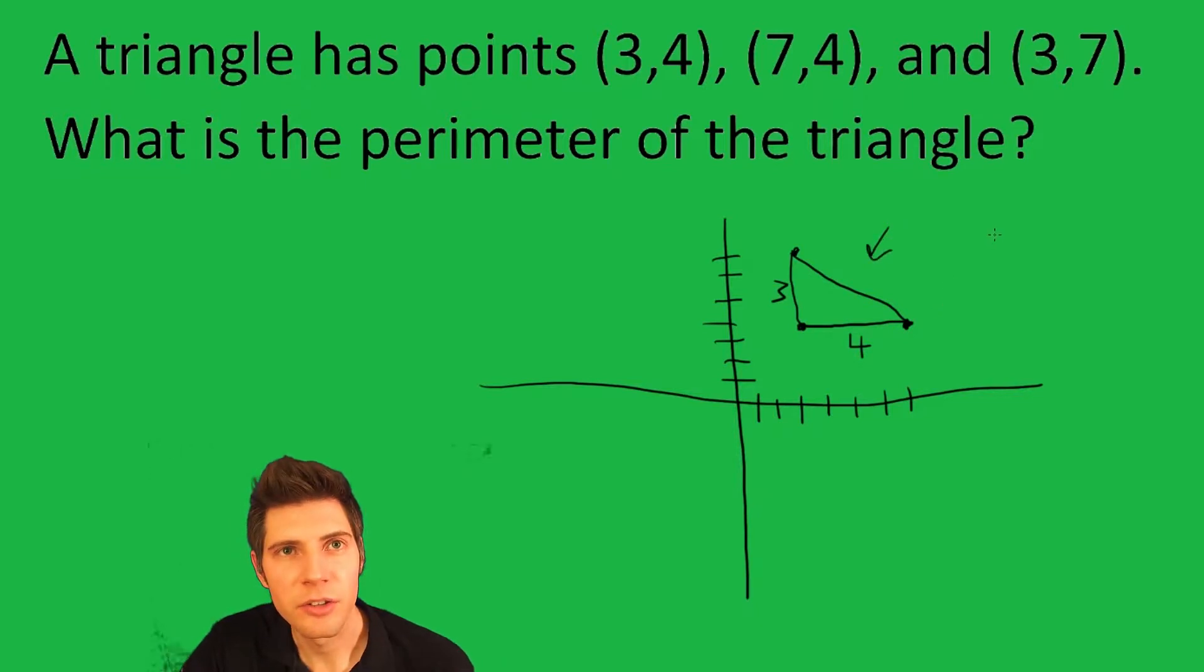So 3² + 4² = c². Well, that's 9, and 4² is 16, equals c². 9 + 16 is 25, so c is 5. So this is 5.